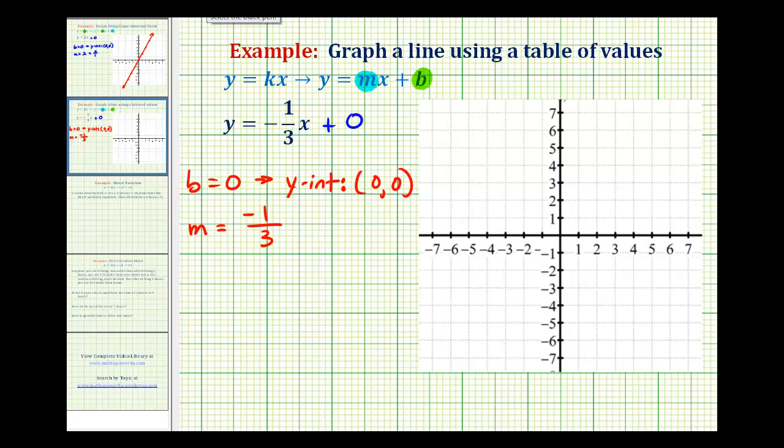So now to graph this line, we'll first plot the y intercept, which is zero, right here at the origin. And then from here, we can use the slope to determine additional points on this line.